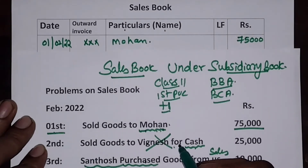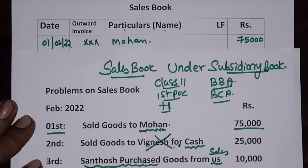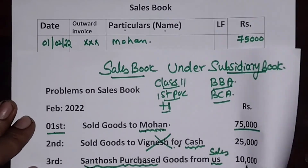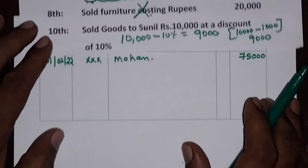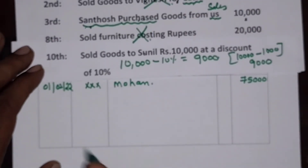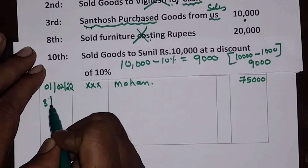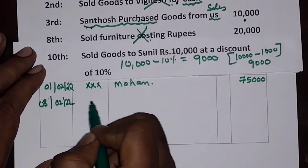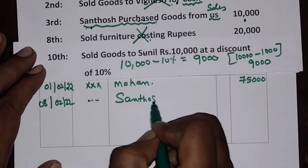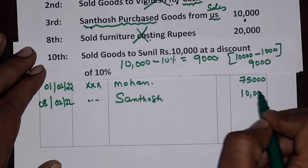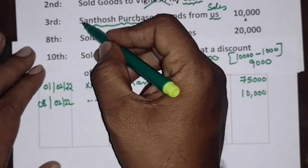Entry 2 — sold goods to Vignesh for cash — does not appear. Entry 3: Santosh purchased goods from us for ₹10,000. For us it is sales, so date is 3rd February 2022, invoice number recorded, name is Santosh, amount is ₹10,000.